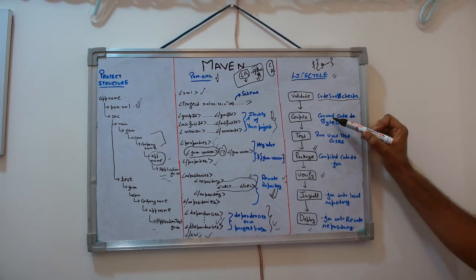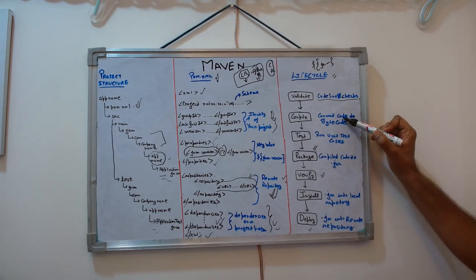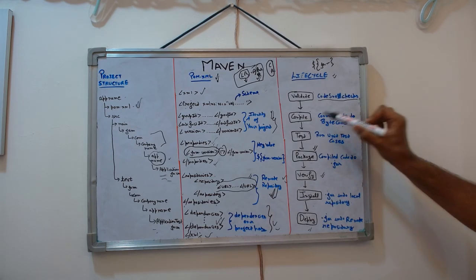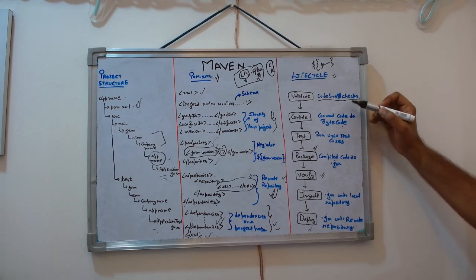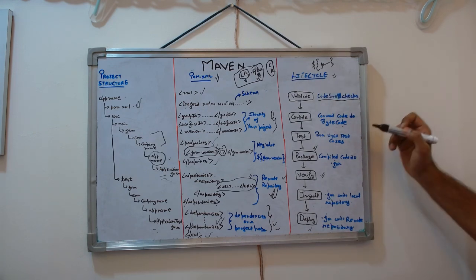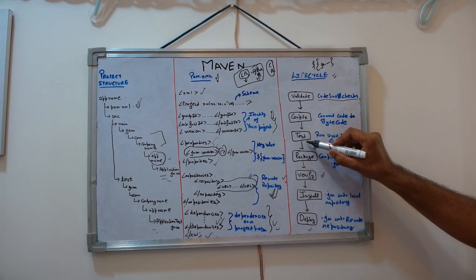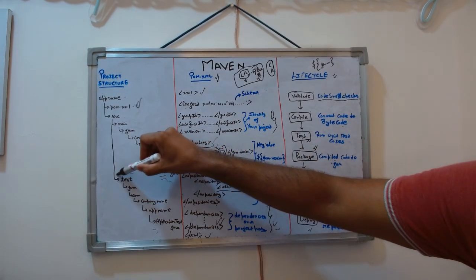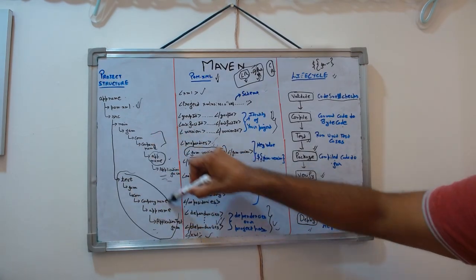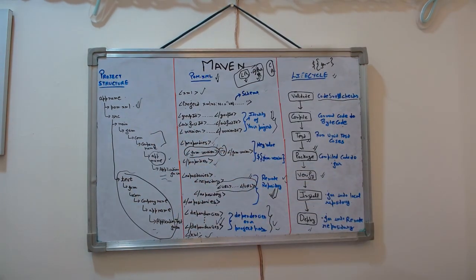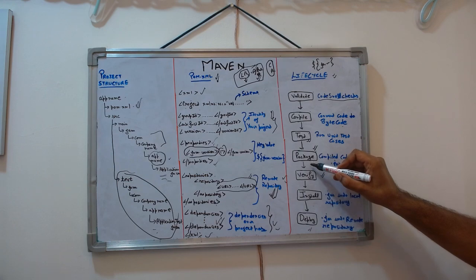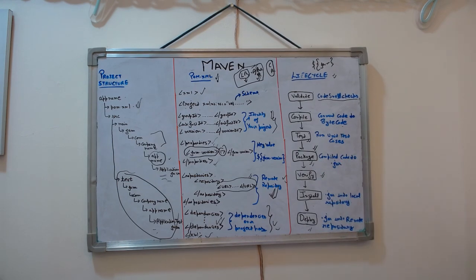The next phase is compile, where your code gets converted to bytecode and .class files are generated. If you run 'mvn compile', it will first validate and then compile. The third phase is test — all your unit test cases run here. If any unit test fails, your build fails at this phase.